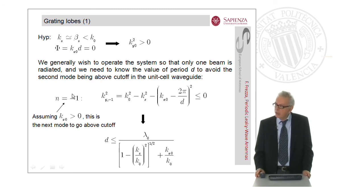So we impose here, for the n equals minus 1 harmonic, this is the next mode to go above cut-off in our assumptions, that the correspondent wave number k_y(-1) squared should be less than zero. And this is the final relation, which is a limit for the period of the array.